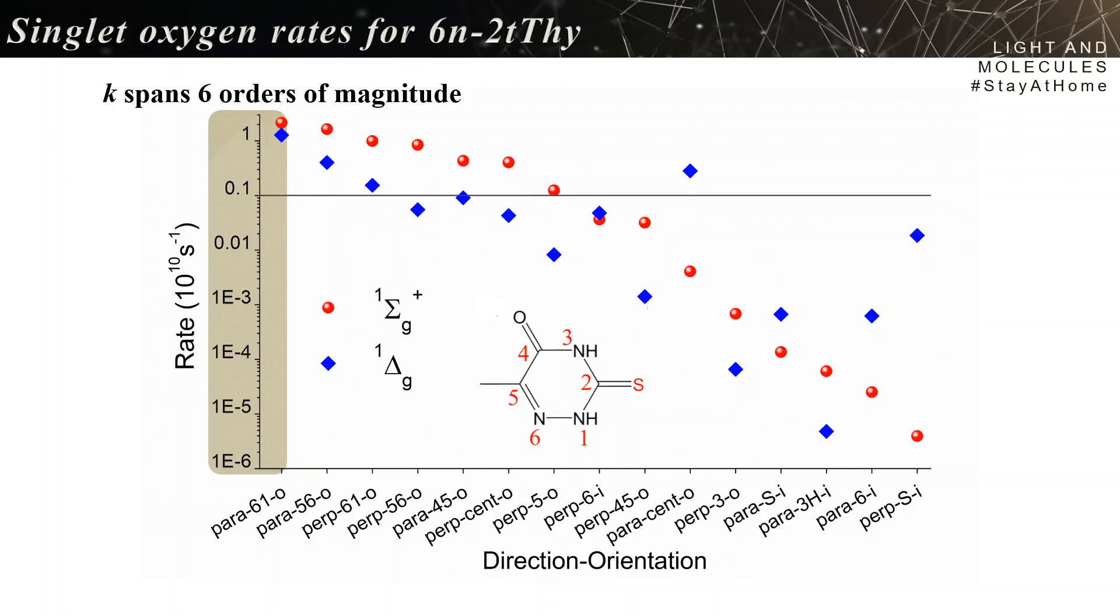And another interesting feature is that for all directions that are relevant in terms of rates, that have an appreciable rate, they are out-of-plane directions. So the oxygen is approaching thiamine above or below the plane, not in the plane.